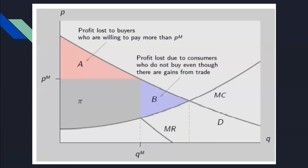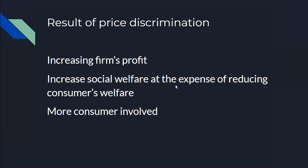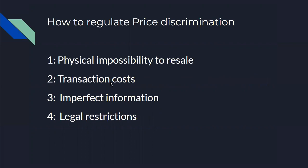What are the results of price discrimination? There are four: first, it increases profit — adding the pink area A plus the blue area B. Second, it increases social welfare at the expense of reduced consumer welfare. Third, more consumers are served in the market. However, only firms with market power can practice price discrimination.